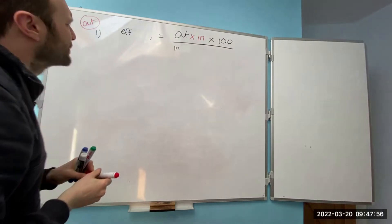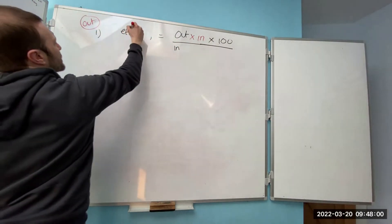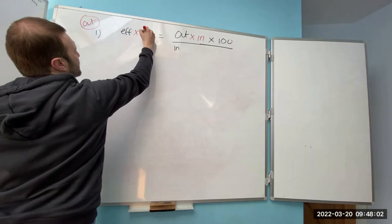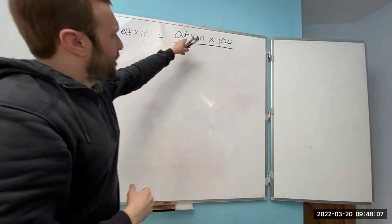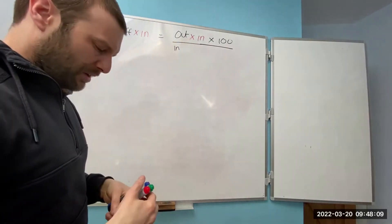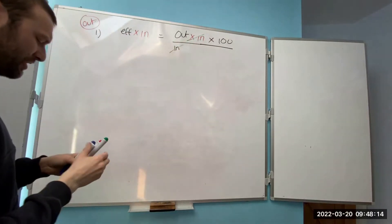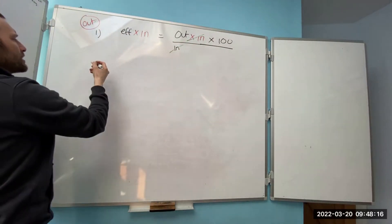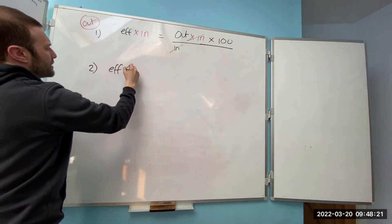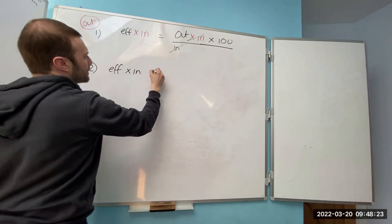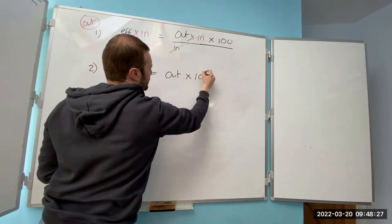So let's put that in there. Whatever I do this side, I do this side, so efficiency times input. Times input divided by input, well nothing happens, so I can remove that. Then just to clean up the formula, step two. I've got efficiency times input equals output times 100.